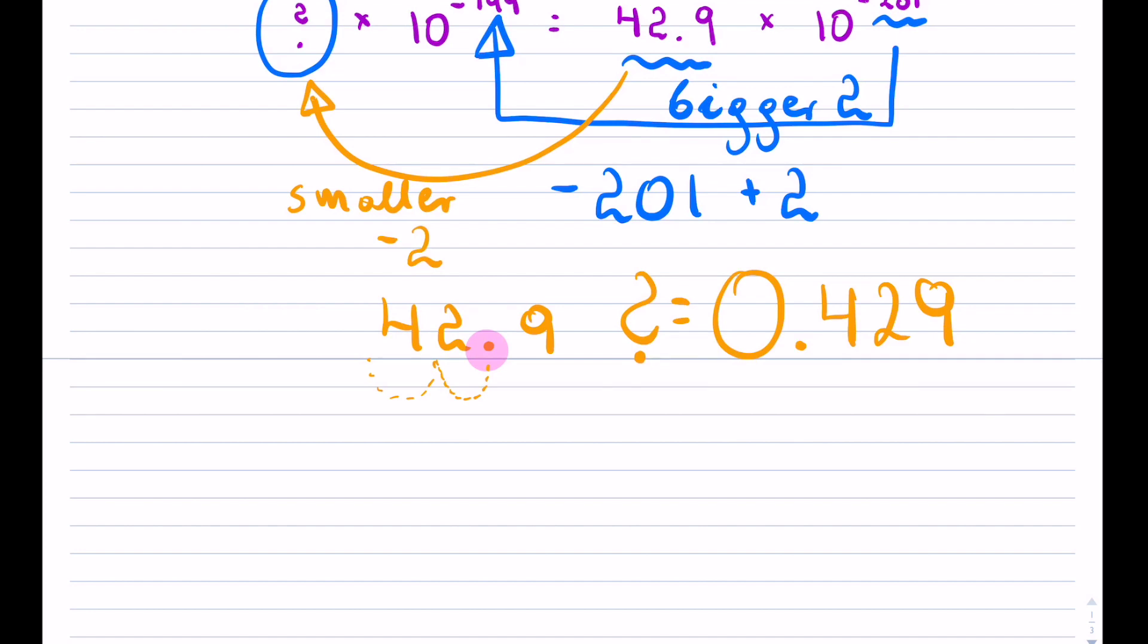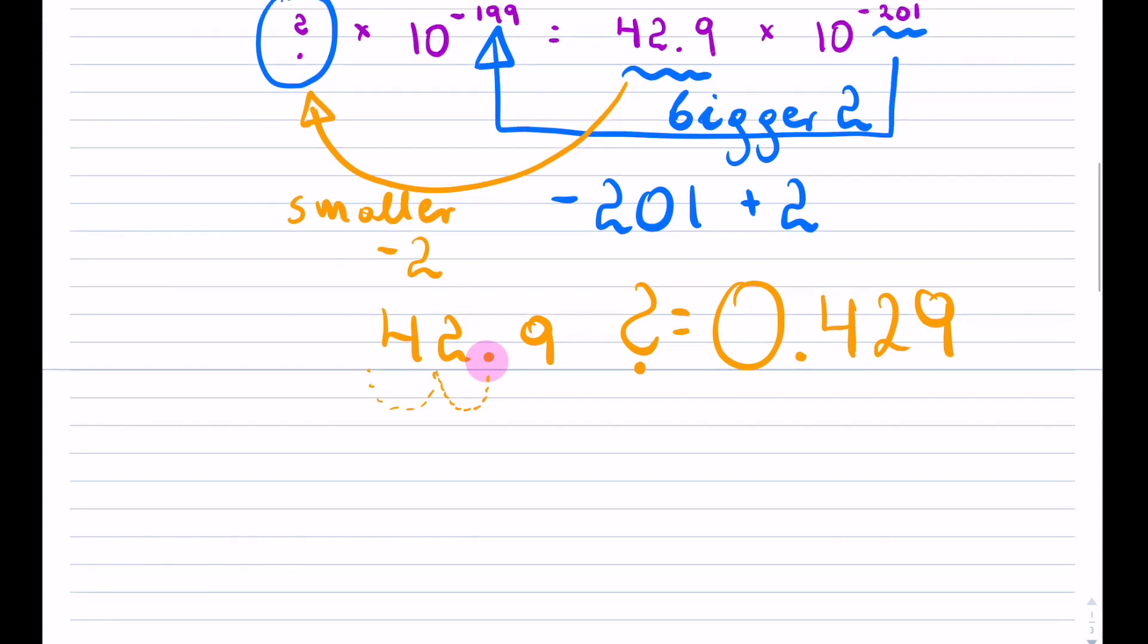So bigger, smaller. And all you're doing is either adding or subtracting to the exponent or moving the decimal to the leading number. That's the second example.